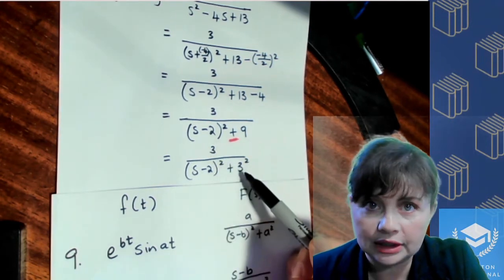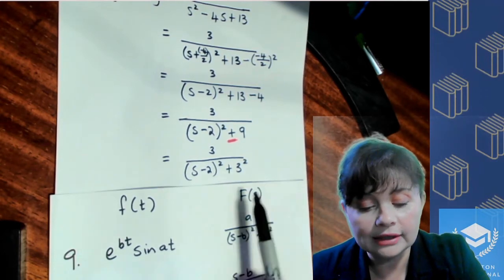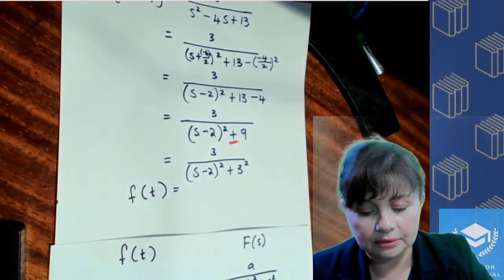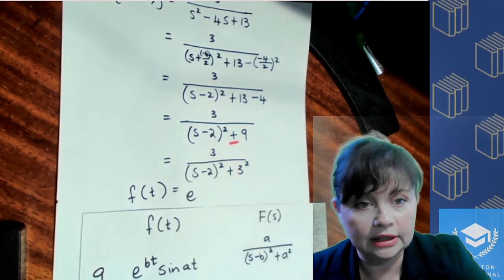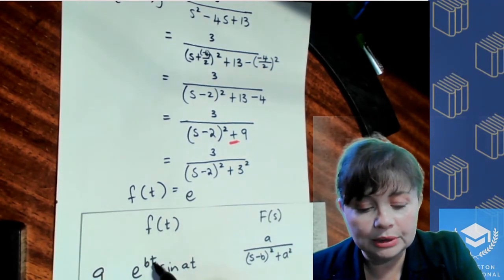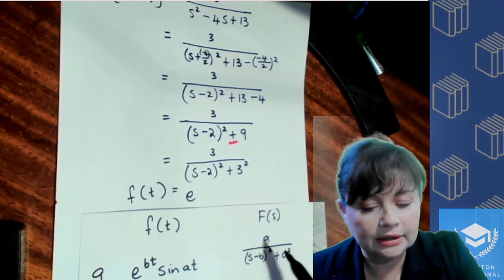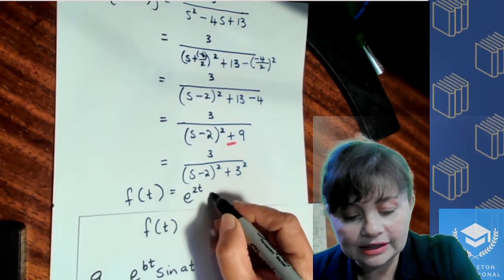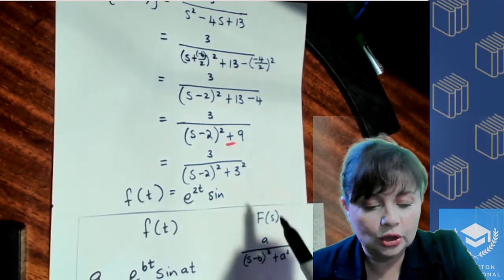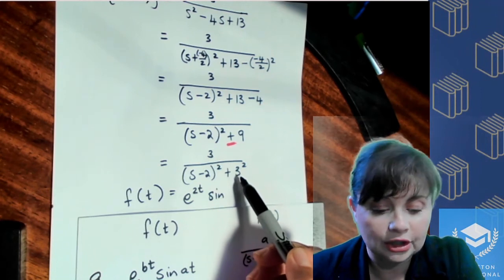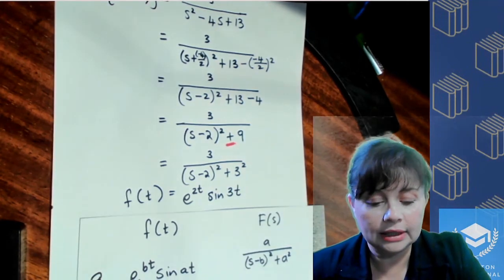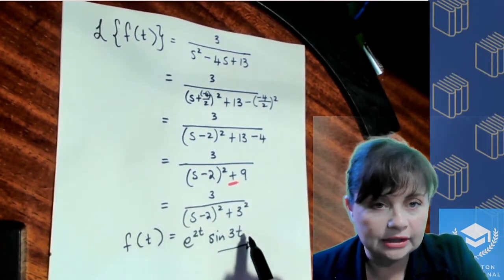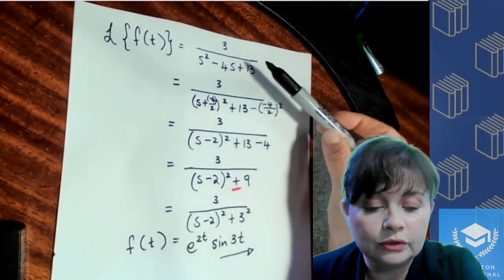We've got a 3 in the numerator and a 3 in the denominator's second term, which means we are now ready to move from F(s) to F(t). So F(t) is going to be e to the power bt — b is what is in the bracket squared, so b is 2, giving us e to the 2t — then sine of at, where a is what is in the numerator matching the second term, so it's sine(3t). That's the final answer in terms of t, with no s's at all.